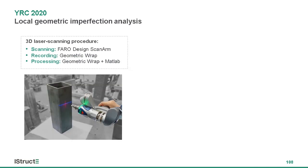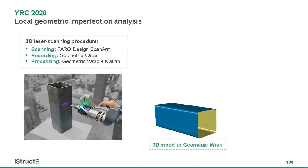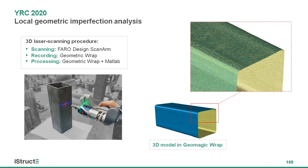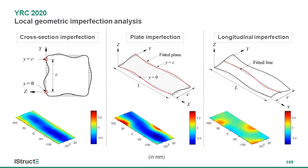Next, we measured the local imperfections in the specimens using laser scanning. We scanned the outer surface of the specimen, recorded the data, and then established a 3D model to characterize local imperfections from the scan data. We came up with three different methods. The first one we call the cross-section imperfection: we look at a series of cross-sections along the length and take the out-of-straightness of each flat region as the local imperfection.